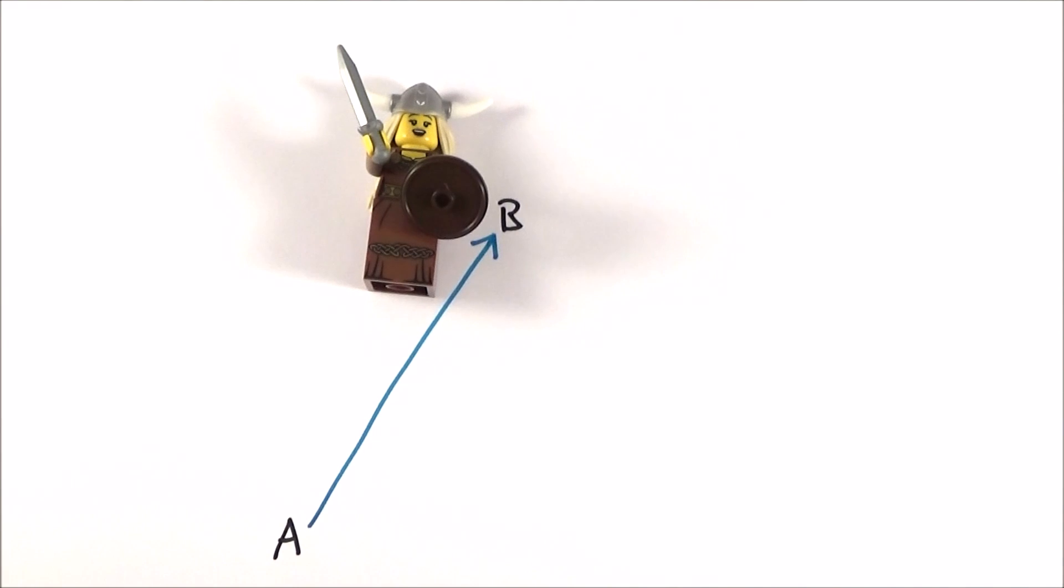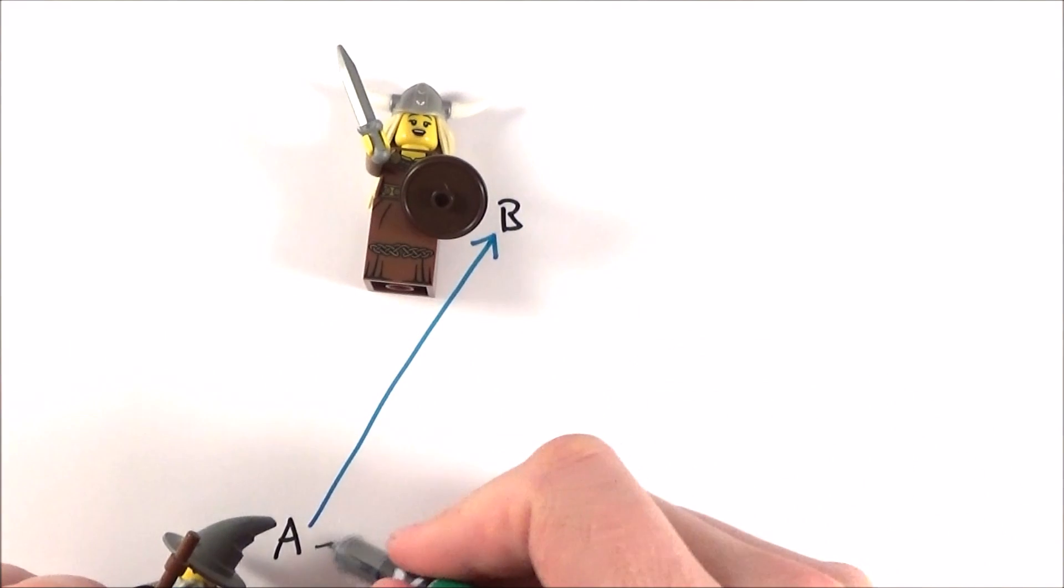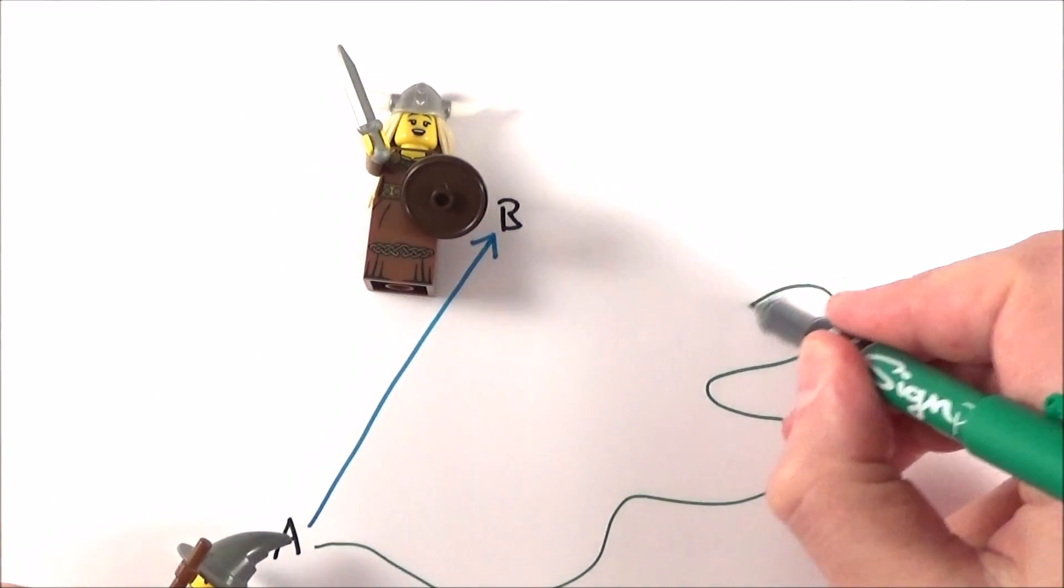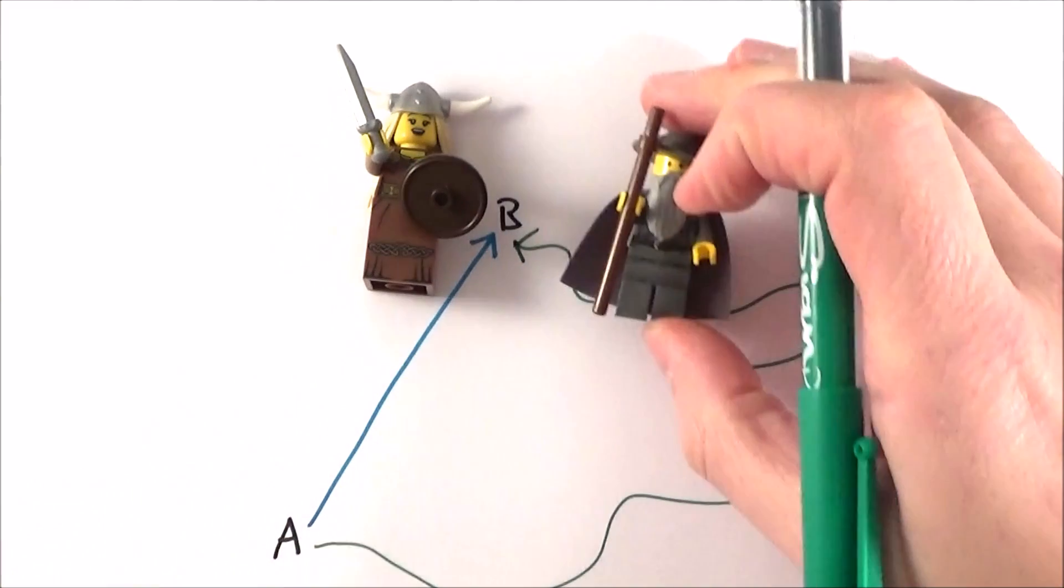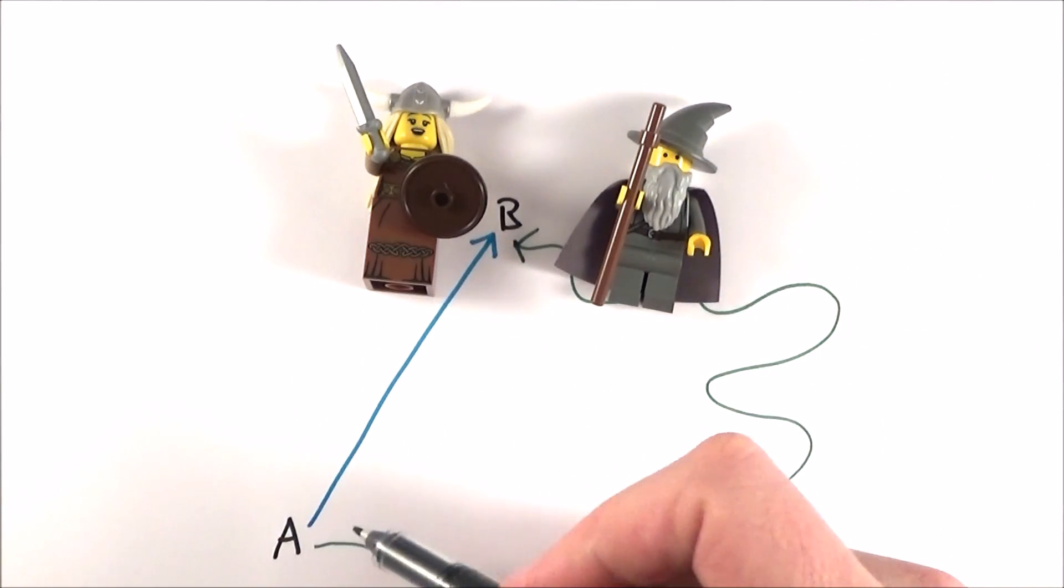However, Gandalf the Grey might take a longer journey battling with orcs and doing whatever he does and he goes at a different distance to get to point B. Now the two of them will have started at the same position, ended up at the same position, but what they'll have done is gone a different route.